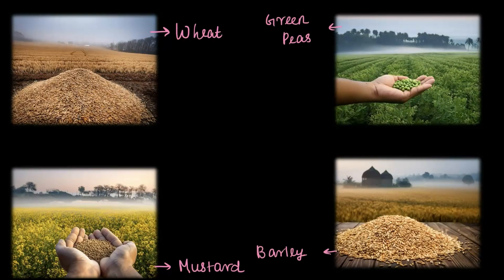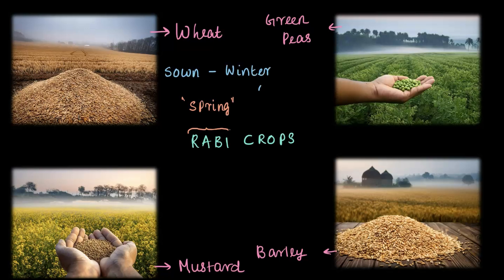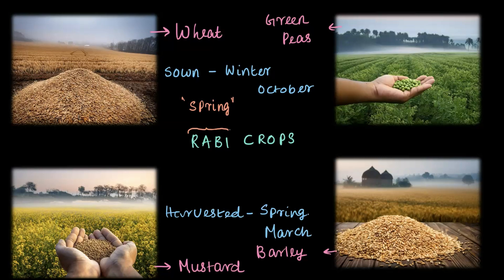Similarly, crops like wheat, mustard, green peas, and barley are grown during the winter season, from October to March in India. These are called Rabi crops. The word 'Rabi' is from Arabic and means spring — because these crops are sown at the beginning of winter in October and harvested by the end of spring in March.